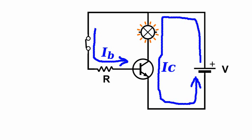When saturated, the transistor permits the free flow of current. In other words, it behaves like a closed switch.